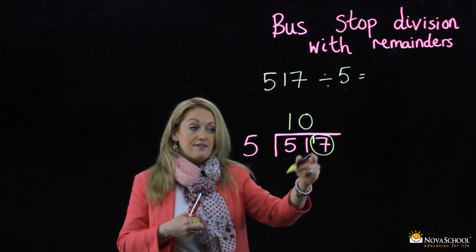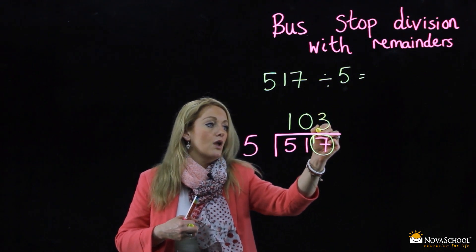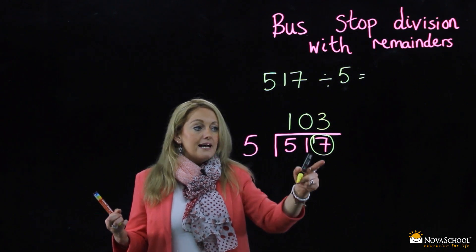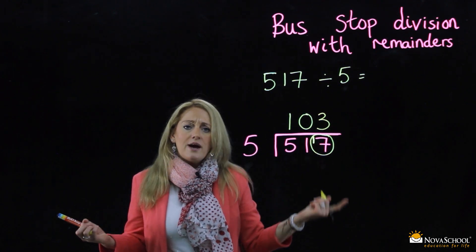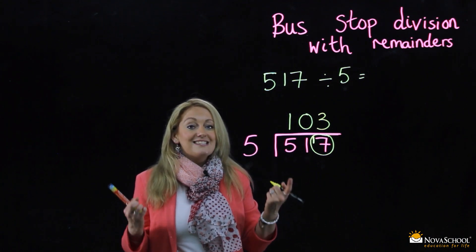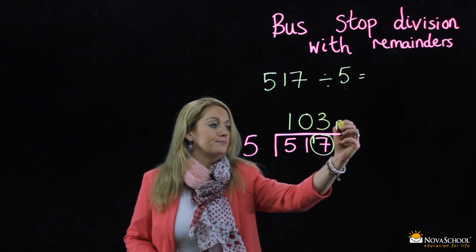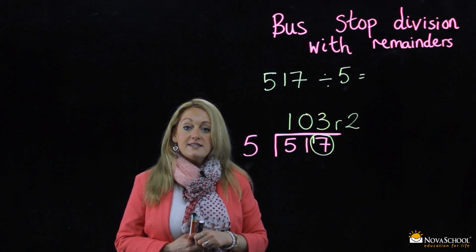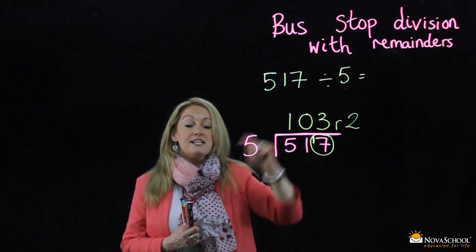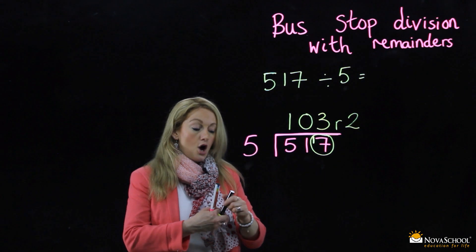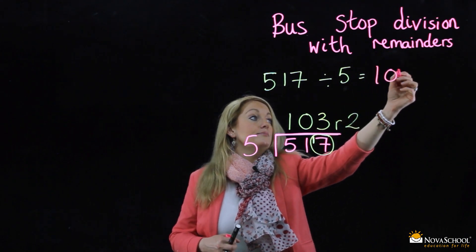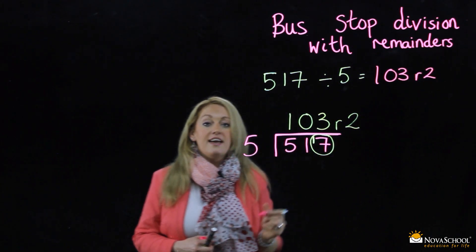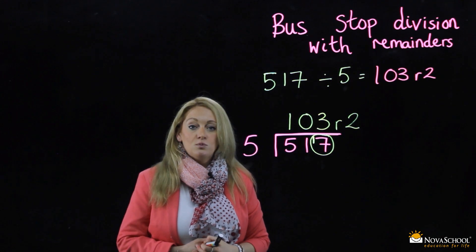Pop your three above the seventeen. But I haven't finished yet — there is still something left over. Seventeen take away fifteen is two. That's my remainder. That's how we write our answer. So, what is five hundred and seventeen divided by five? It's one hundred and three, remainder two. There you go — bus stop division with remainders.